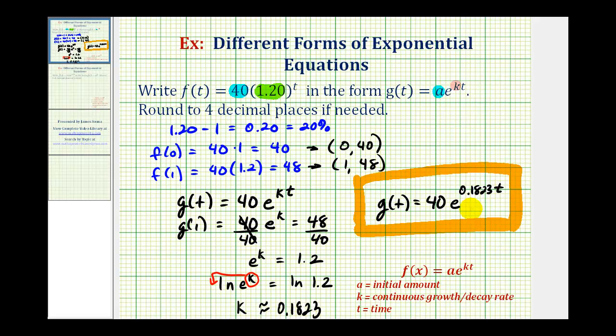To emphasize the difference between these two exponential functions, the original function told us we had a 20% exponential growth rate per year, but g(t) tells us the continuous growth rate is approximately 0.1823 or approximately 18.23%.